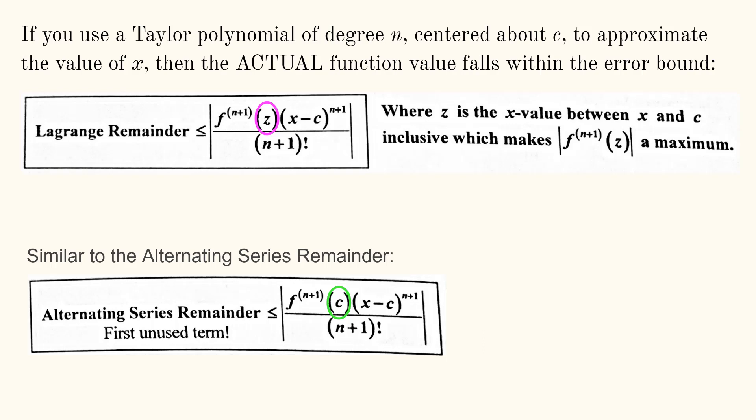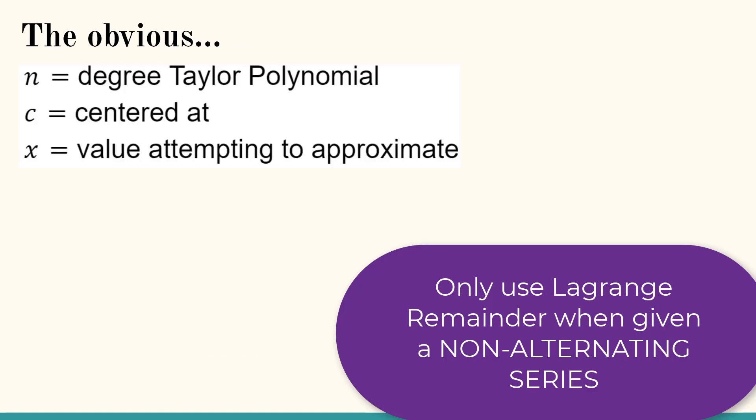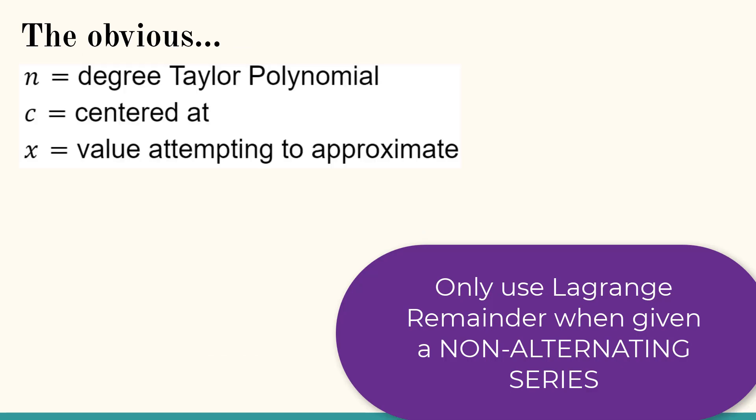What is that talking about? Well, I'm going to show you some scenarios for which we make sure we choose the z that gives us a maximum. So n is the degree of the Taylor polynomial, c is where you're centered at, and x is the value you're attempting to approximate.